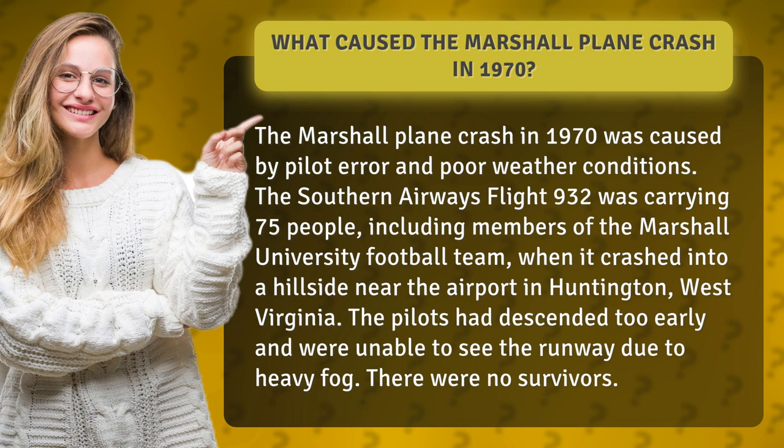Southern Airways Flight 932 was carrying 75 people, including members of the Marshall University football team, when it crashed into a hillside near the airport in Huntington, West Virginia. The pilots had descended too early and were unable to see the runway due to heavy fog. There were no survivors.